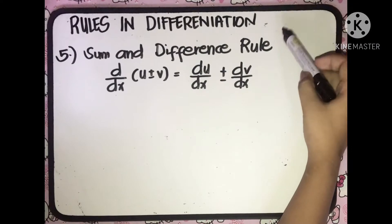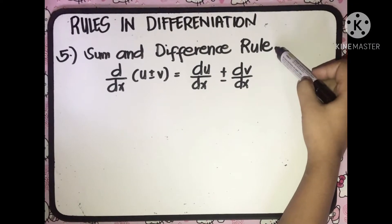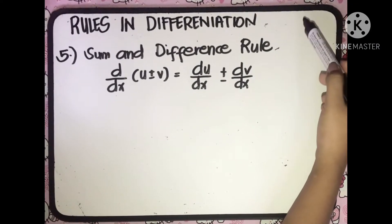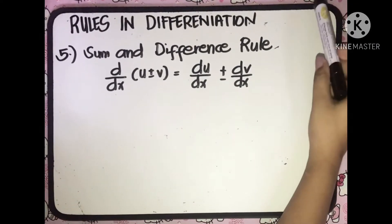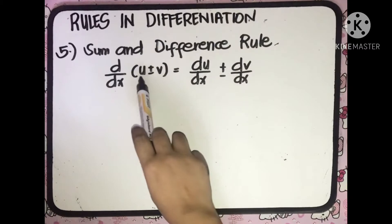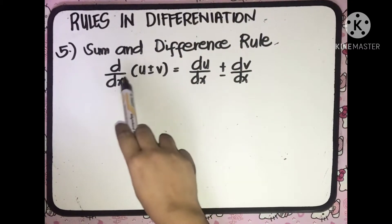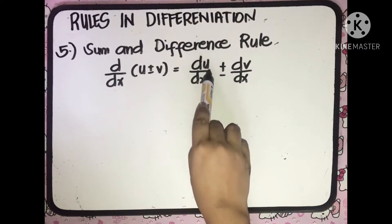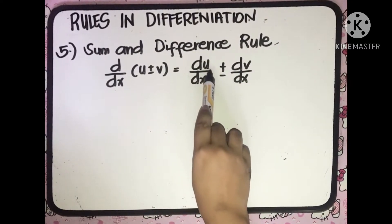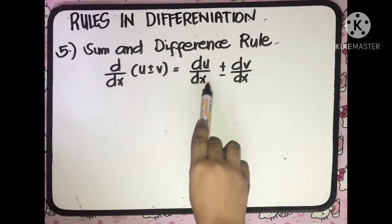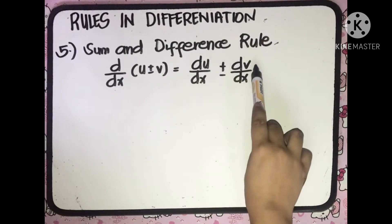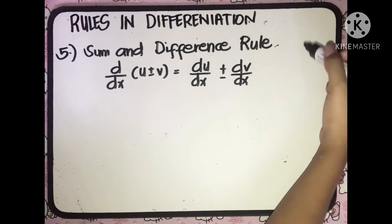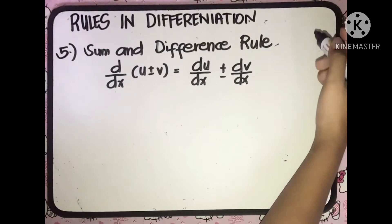The fifth rule is the Sum and Difference Rule. The derivative of u plus or minus v with respect to x is equal to the derivative of u with respect to x, plus or minus the derivative of v with respect to x.